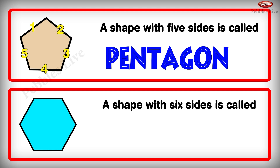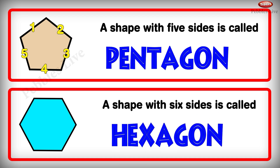A shape with 6 sides is called a hexagon.